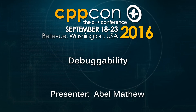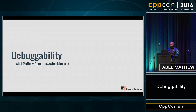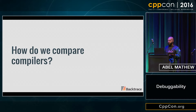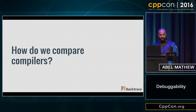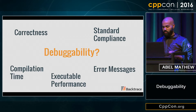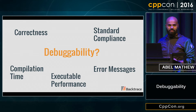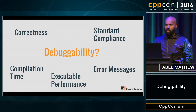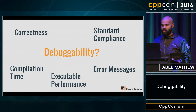A common discussion I have with people is GCC versus Clang. But the way they typically compare compilers ends up being with a couple of criteria: performance and warning or error messages, and that's kind of where the conversation stops.